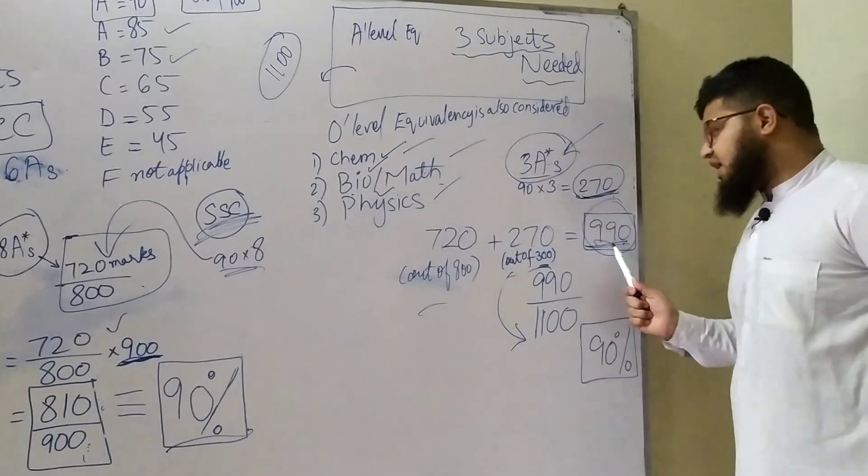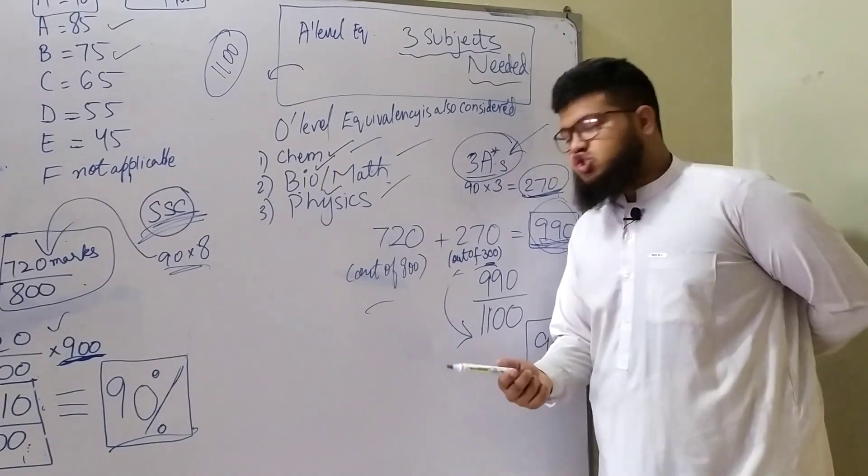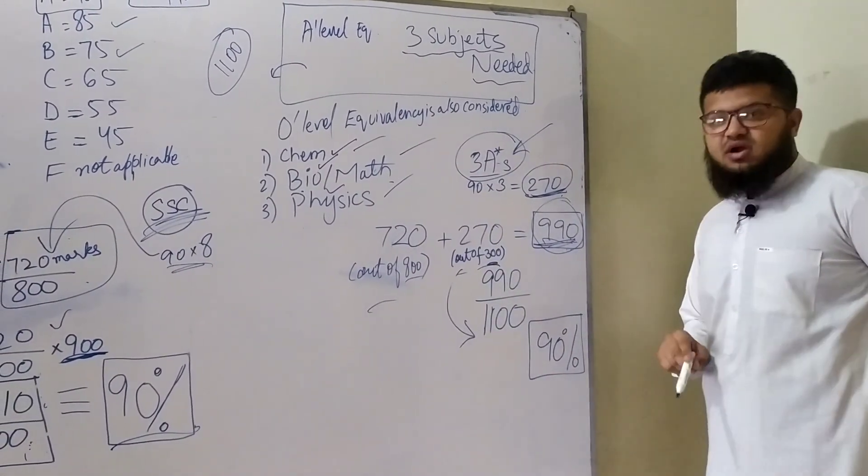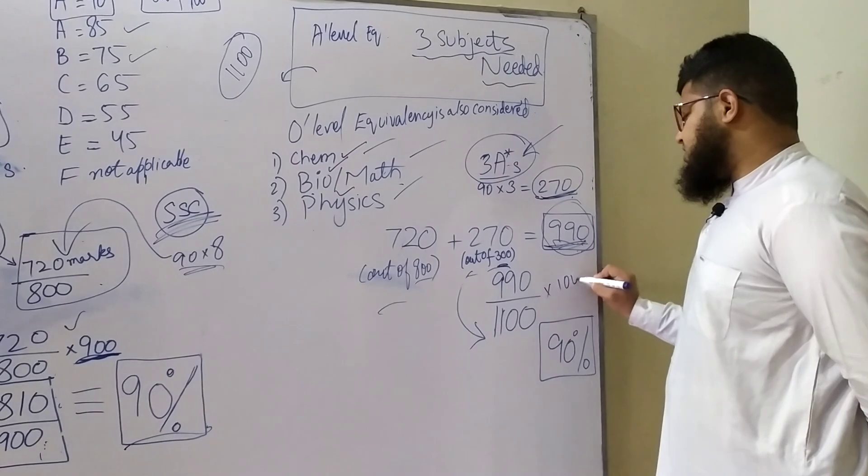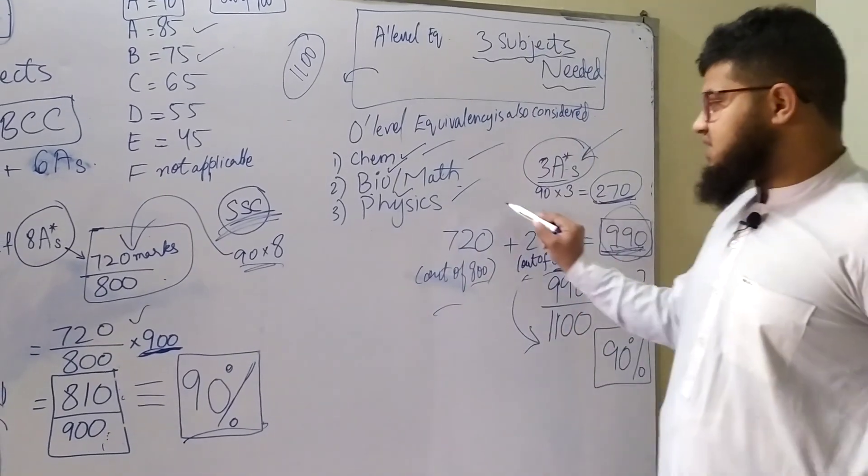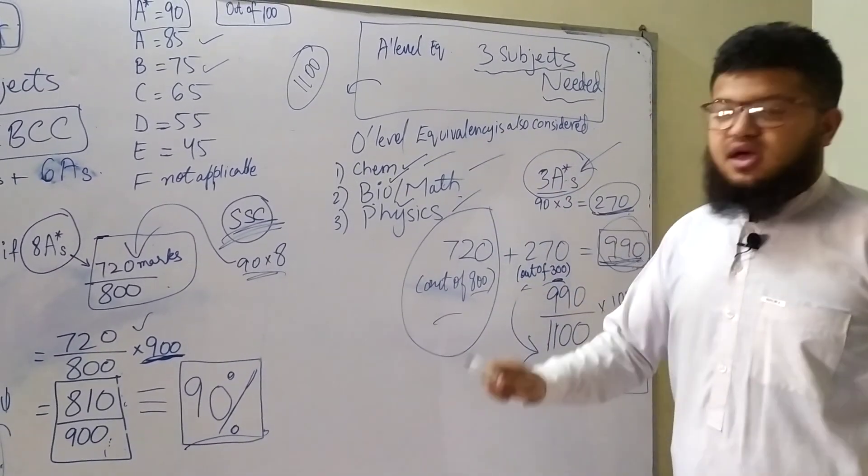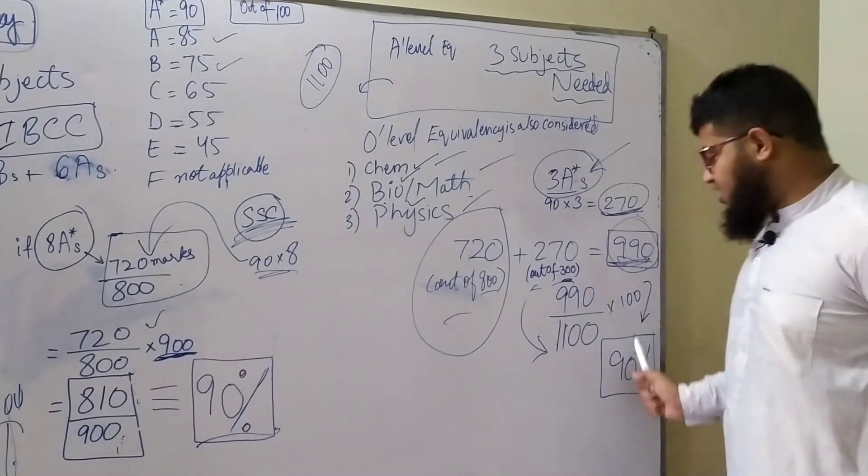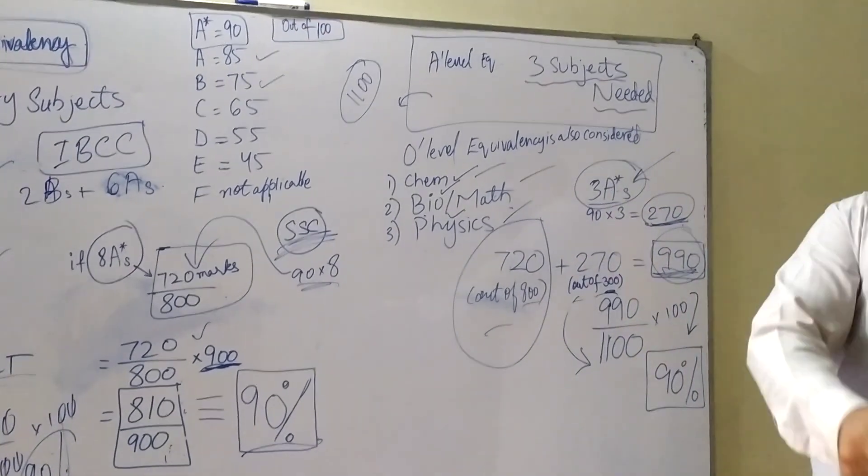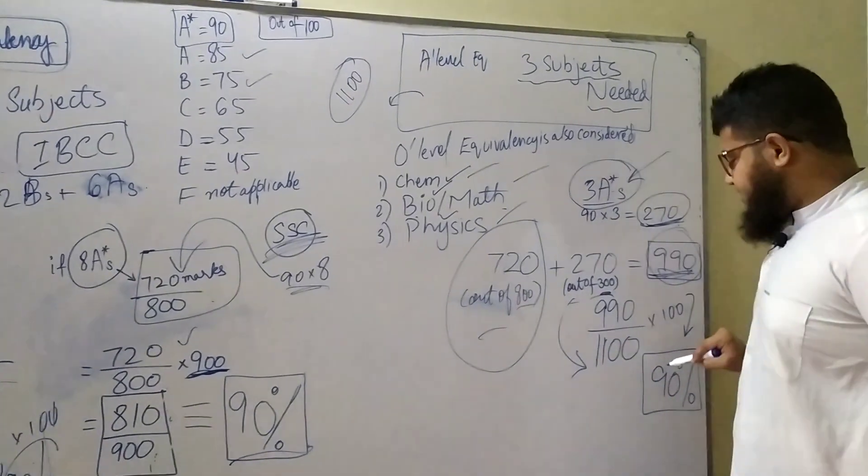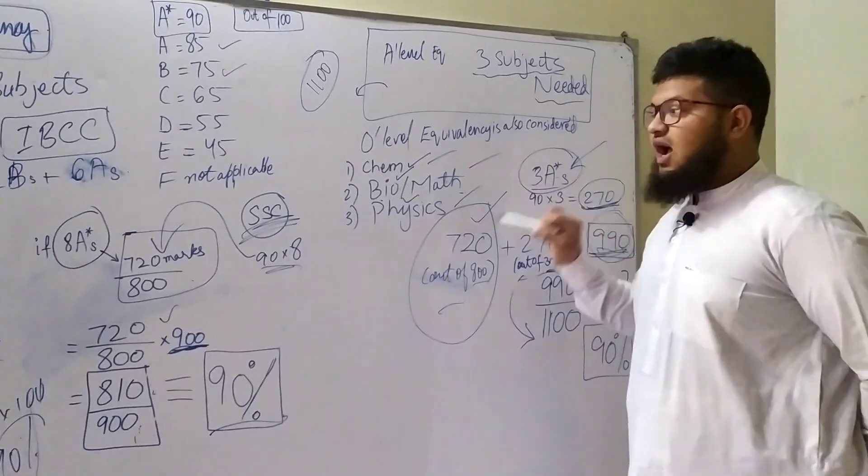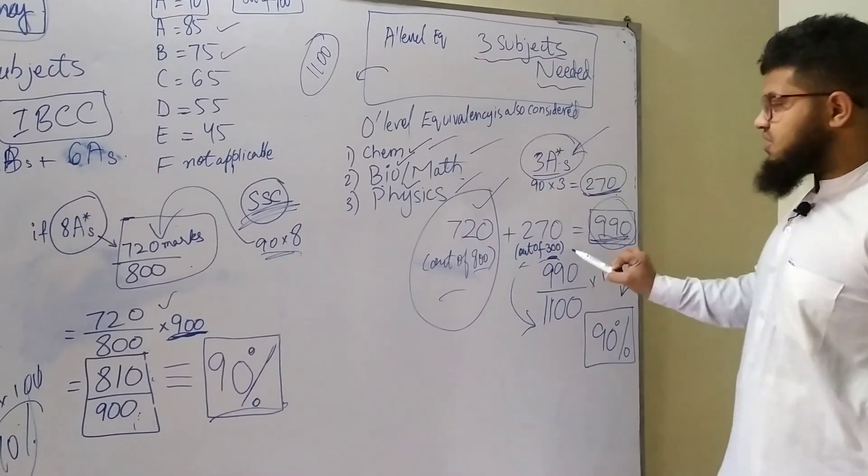Here you should note one thing: if someone has these 720 marks in O-levels, but if someone gets bad grades in O-levels, will this affect the overall A-level equivalency? Of course it will. A-level equivalency will be heavily affected. A-level equivalency will be greatly affected if O-level equivalency is bad. Or if someone's O-level equivalency is good, O-level grades are good, and A-level grades are still average, then that can help.